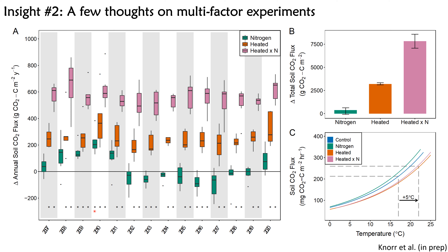Looking first at the middle orange bars — the heated-only plots — we see exactly what we'd expect: an enhanced respiratory response concomitant with significant soil carbon loss. Looking at nitrogen alone, the bottom green bars, we see an initial stimulation of respiration with nitrogen fertilization, but after a few years, that respiratory response goes to at or below the control level. Based on our work in the long-term chronic nitrogen amendment experiment, this nitrogen-only treatment will ultimately show a suppression of soil respiration and an accumulation of soil carbon.